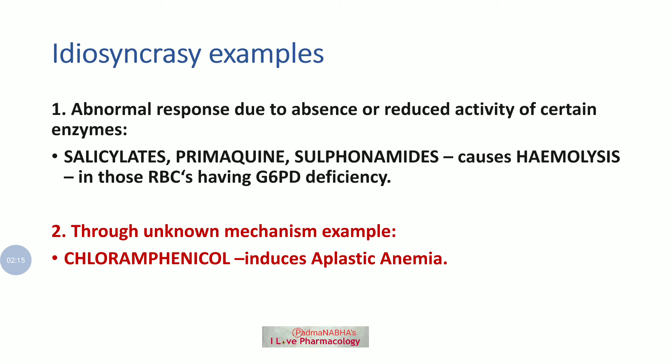Examples of idiosyncrasy include: abnormal responses due to reduction or absence of certain enzyme activity — salicylates, primaquine, and sulfonamides can cause hemolysis in patients where RBCs lack the G6PD enzyme. Another example mediated through an unknown mechanism is chloramphenicol, which can induce serious aplastic anemia.